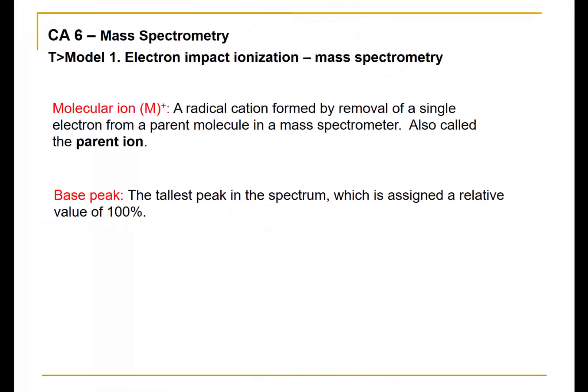Let us now return to the ChemActivity notes and highlight some important definitions. Molecular ion, which is symbolized as brackets M+, is a radical cation formed by the removal of a single electron from a parent molecule in a mass spectrometer. This is also called the parent ion. A few points here.